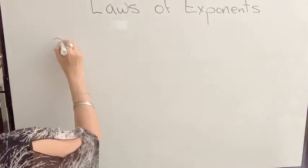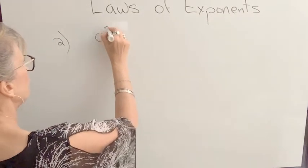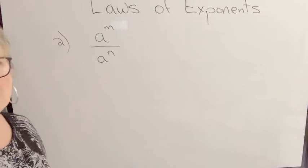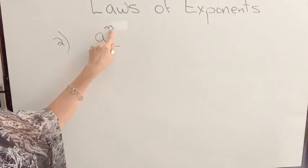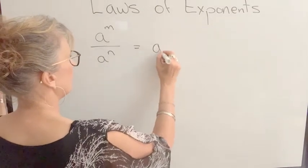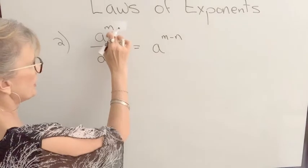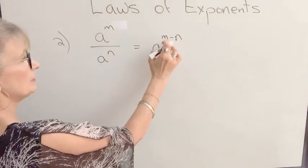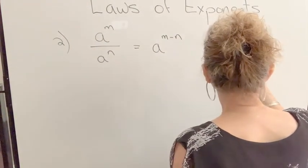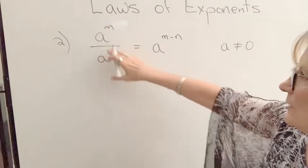Rule number 2 tells us what to do when we're dividing powers that have the same base. So if I have A to the M divided by A to the N, I have two results depending on whether M is larger or smaller than N. So the first rule I'm going to give you is if M is larger, then we subtract the exponents M minus N. So our result will be the same base to the exponent M minus N. And understand that A cannot equal 0.